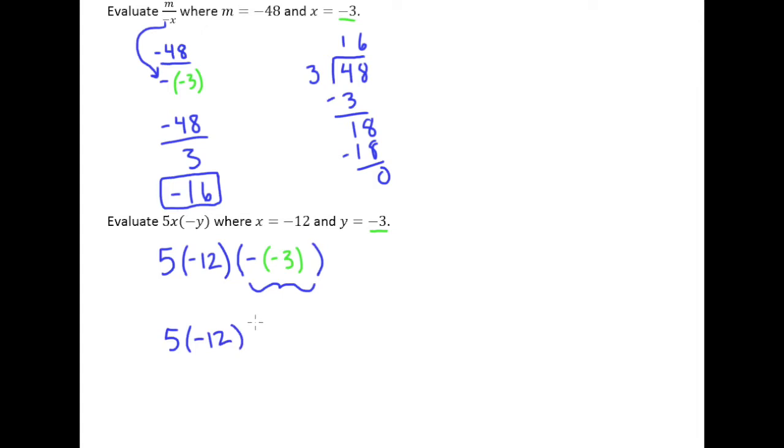So I'll change this to 5 times negative 12 times positive 3. And then I'll just multiply. 5 times negative 12 is going to be a negative number. And it's going to give me 60.